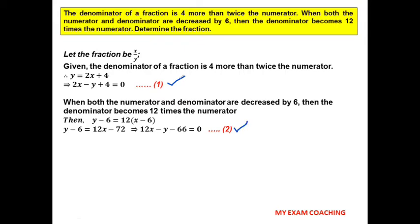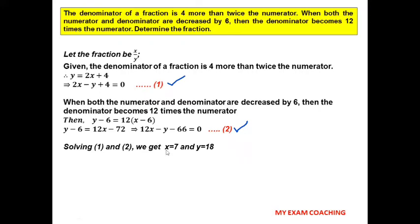We now have a pair of linear equations in two variables. Solving equations 1 and 2 — you can use substitution, elimination, or cross multiplication — we get x = 7 and y = 18. Since the fraction is x/y, the required fraction is 7/18.